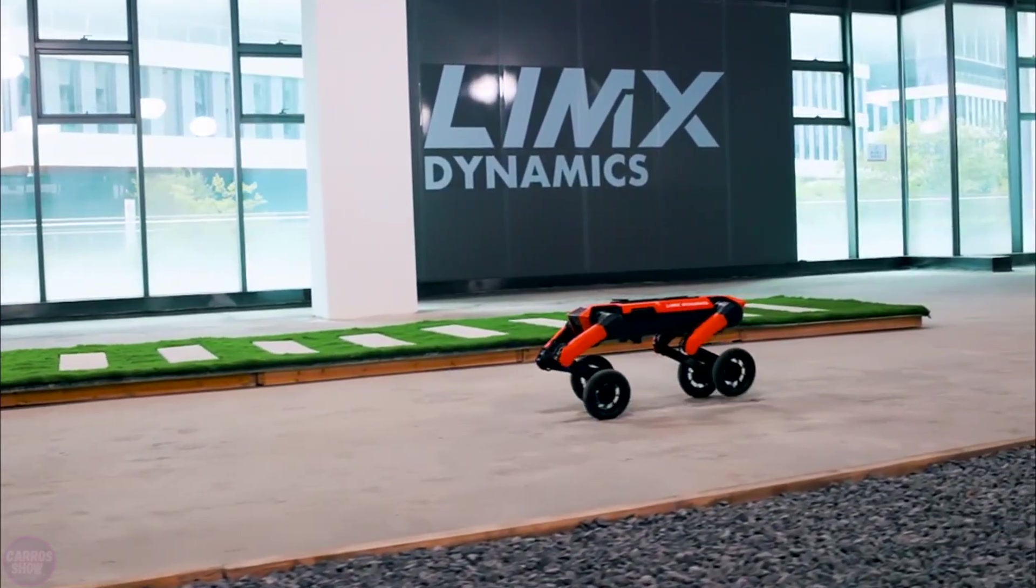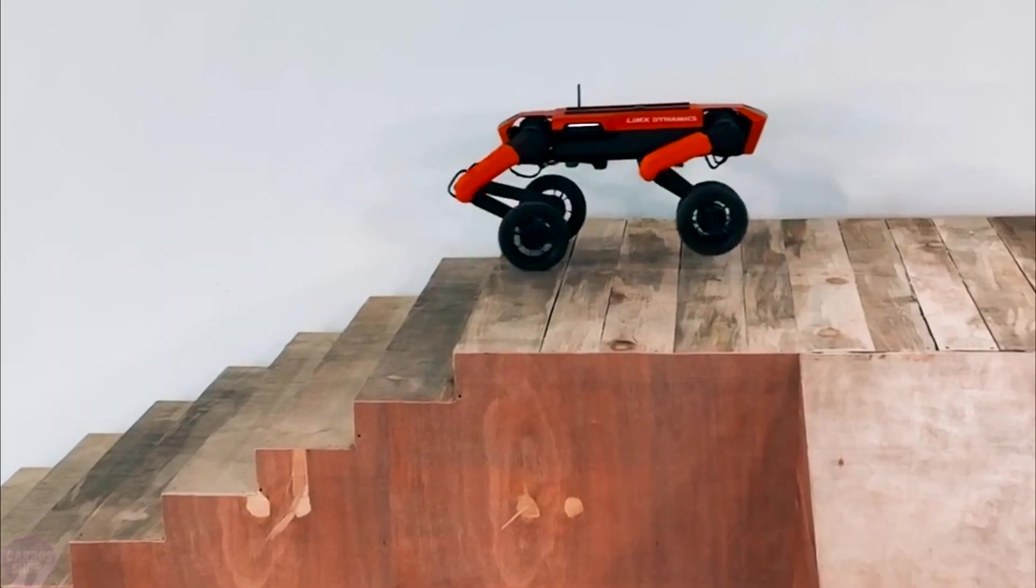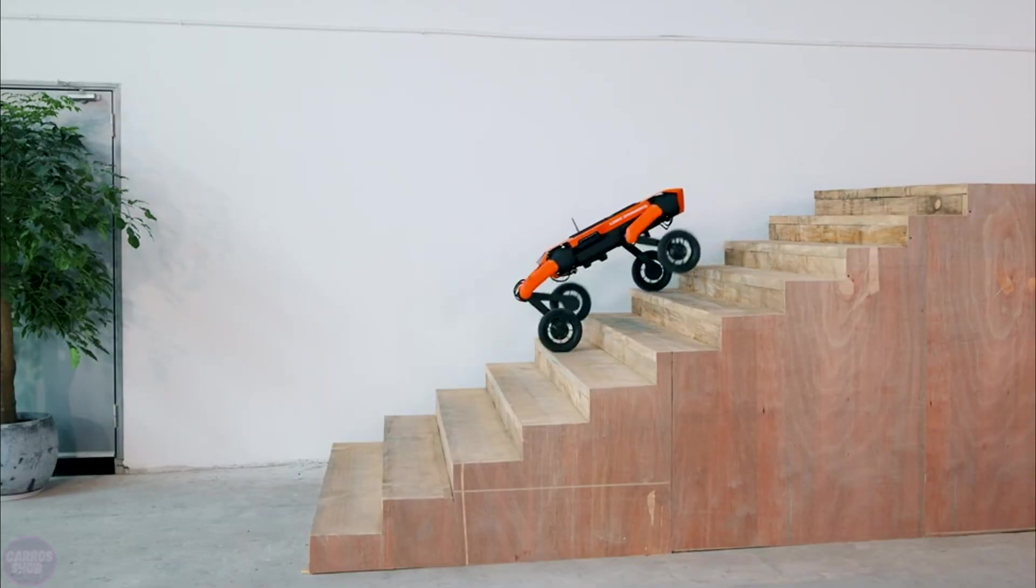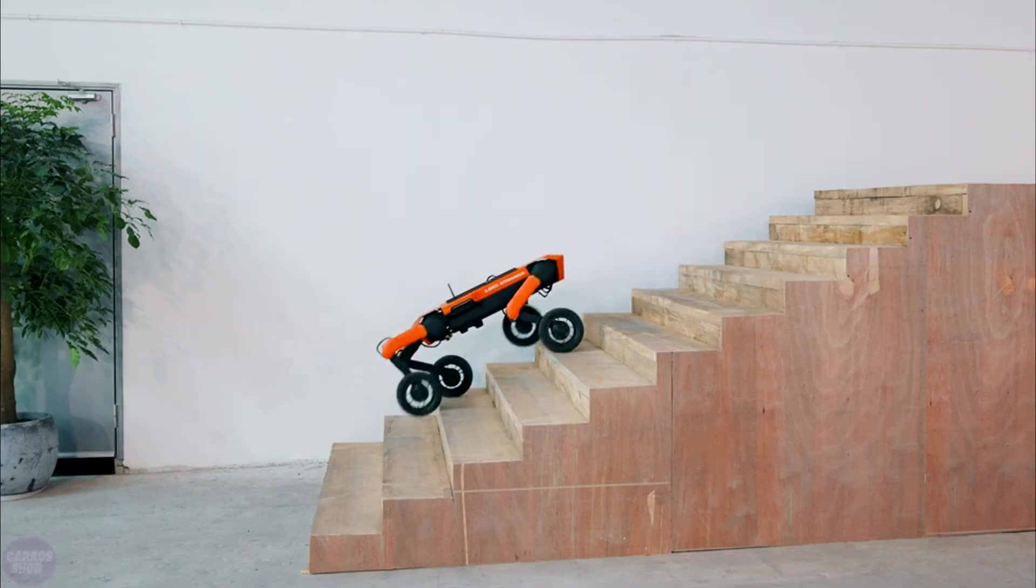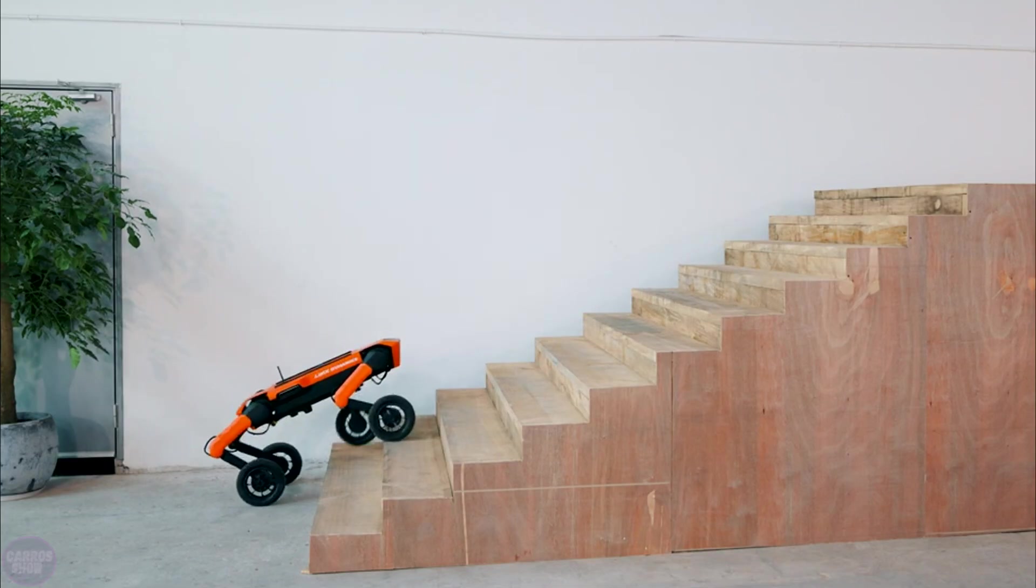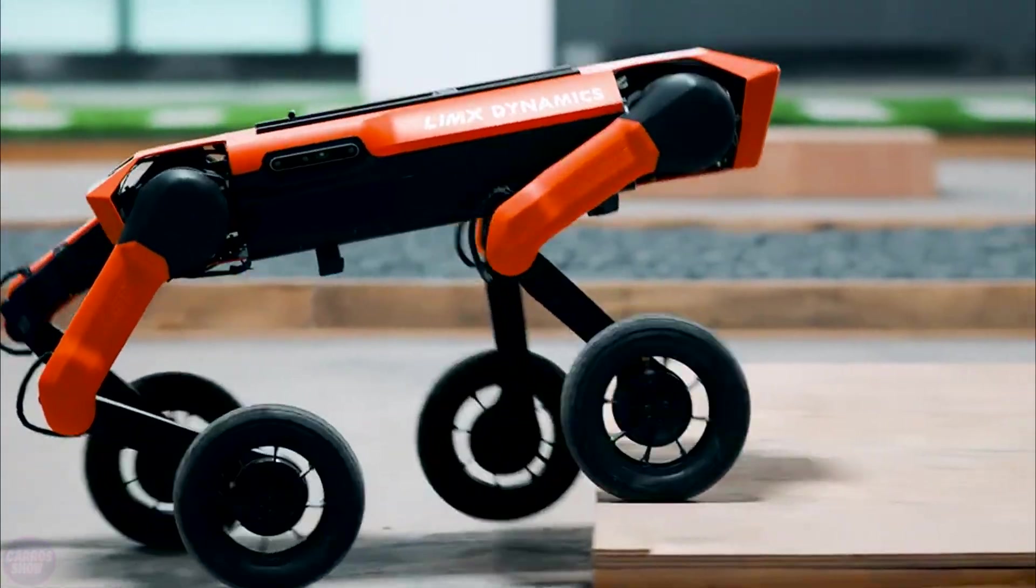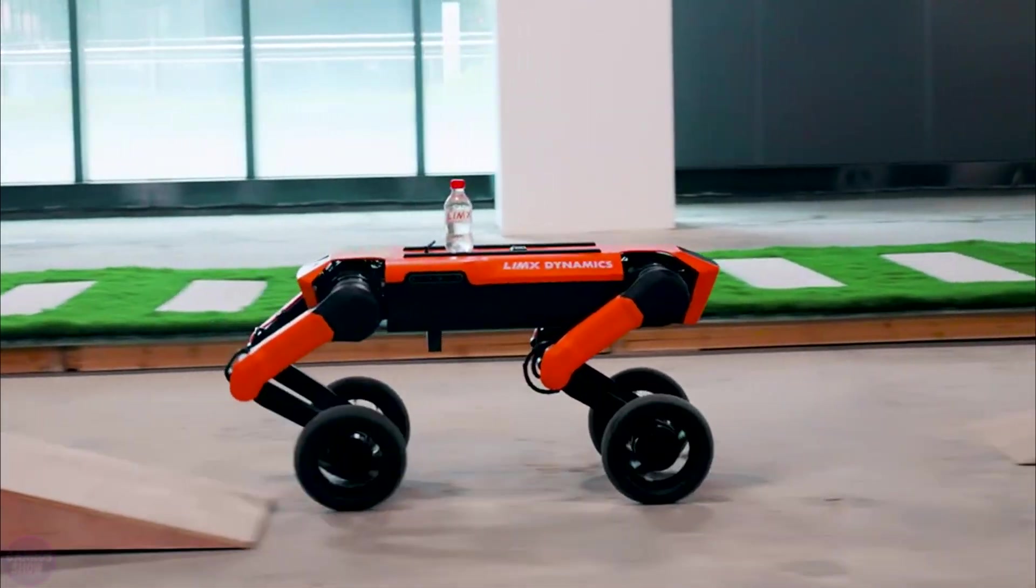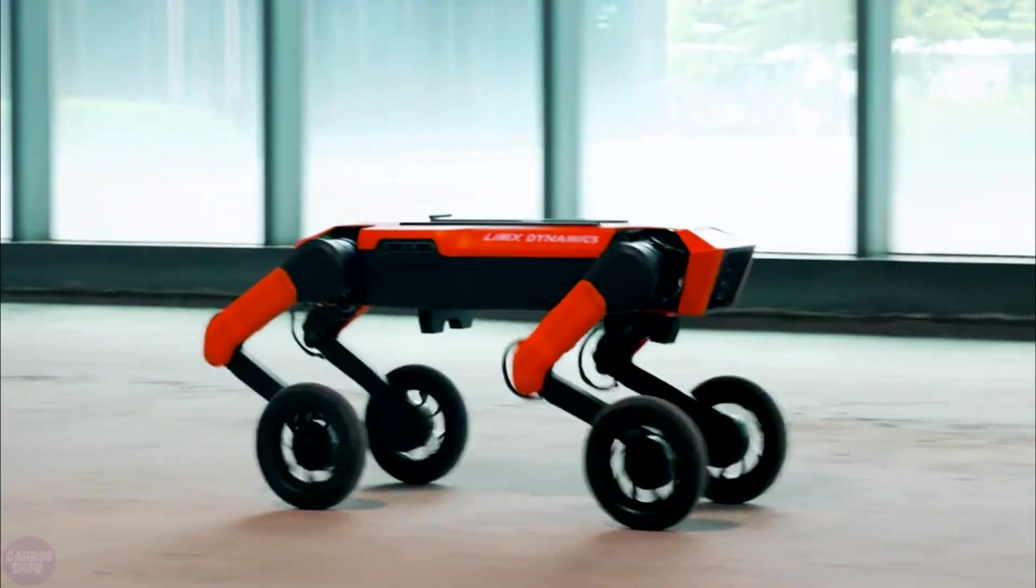LIM-X Dynamics, a Chinese company specializing in the development of walking robots, has unveiled the four-legged robot W1 equipped with wheels at the ends of its legs. The robot is capable of dynamically combining walking with wheeling, overcoming obstacles such as gaps, and moving up and down stairs. Due to the built-in surface type recognition system, W1 can autonomously switch between different modes of movement and dynamically adjust the height and angle of its body relative to the ground during motion.